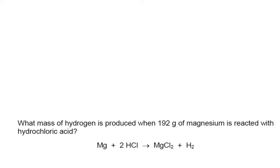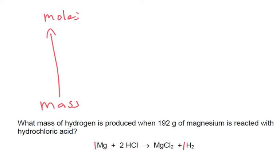What mass of hydrogen is produced when 192 grams of magnesium is reacted with hydrochloric acid? So there's magnesium and there's hydrogen here, it's a 1 to 1 ratio. Starting off with the mass of magnesium and we're going to go to moles. So we've got 192 grams, 192 divided by 24 is 8, so we've got 8 moles of magnesium.